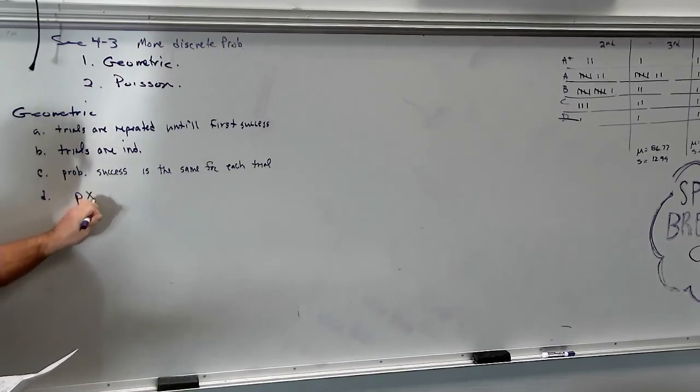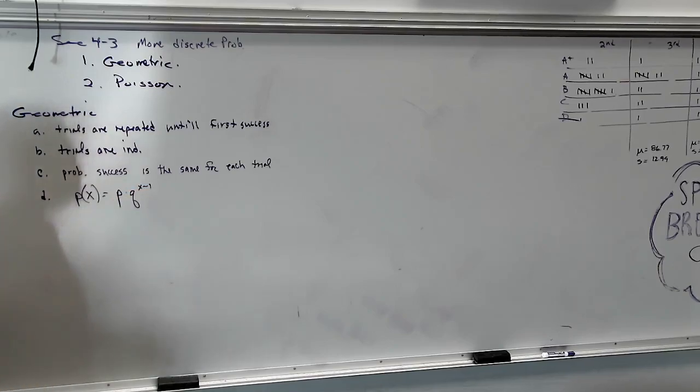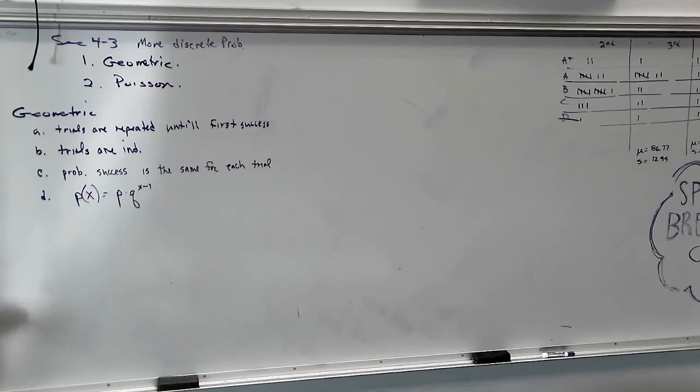So the probability of success is the same for each trial. Here is the formula. It's a very simple formula. It's P times Q raised to the X minus one. Remember P represents success. Q represents failure. Just like last section.